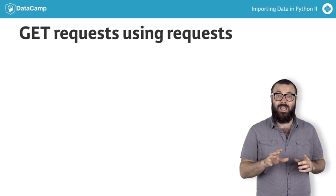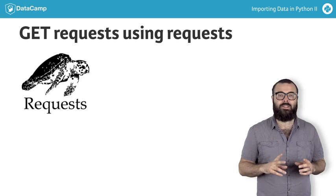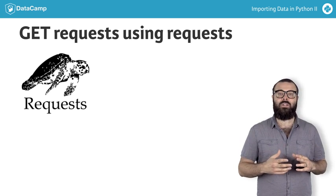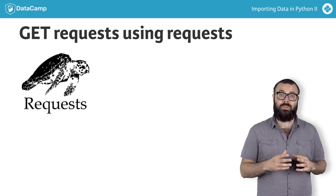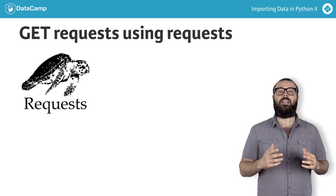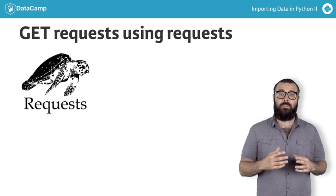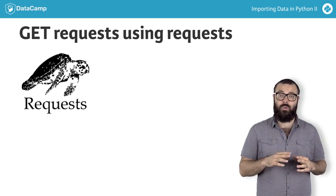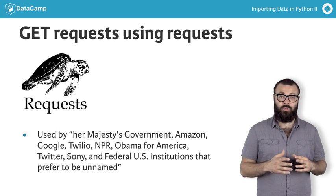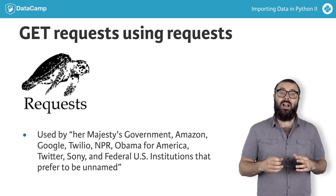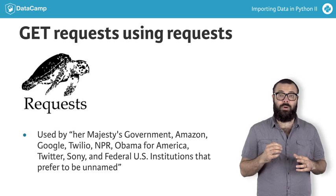Now, we're going to do the same. However, here we'll use the requests package, which provides a wonderful API for making requests. According to the requests package website, requests allows you to send organic, grass-fed HTTP requests without the need for manual labor. The following organizations claim to use requests internally: Her Majesty's government, Amazon, Google, Twilio, NPR, Obama for America, Twitter, Sony, and federal US institutions that prefer to be unnamed.